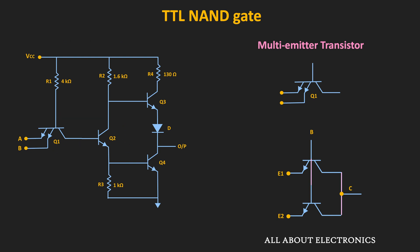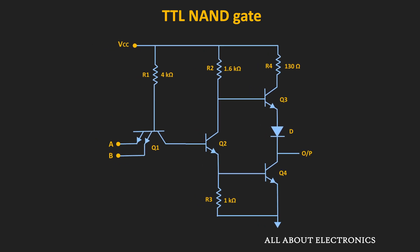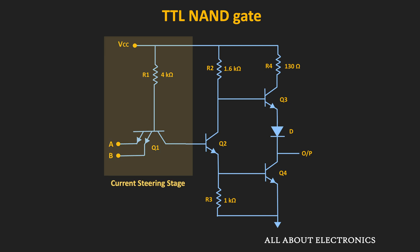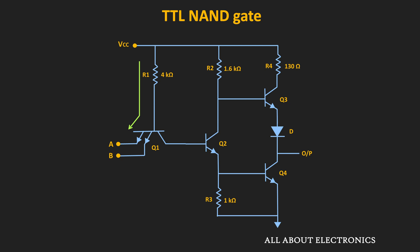Let us see the working of the given circuit. In this TTL logic circuit, the first stage is the current steering stage. Based on the input, the current goes either on the input side or towards the next stage. Whenever this base-emitter junction is forward biased, the current will go towards the input side — whenever the input is low, most of the current flows towards the input side. Whenever the input is high, this base-emitter junction gets reverse biased and most of the current goes towards the next stage.